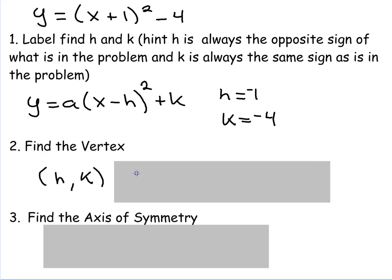The vertex is always of the form H, K. So in this case, my vertex is negative 1, negative 4.